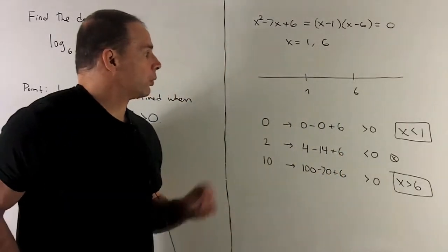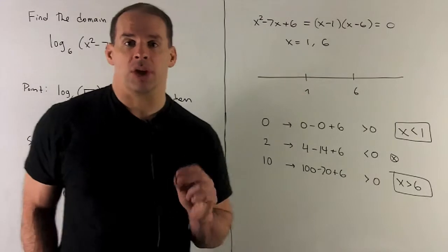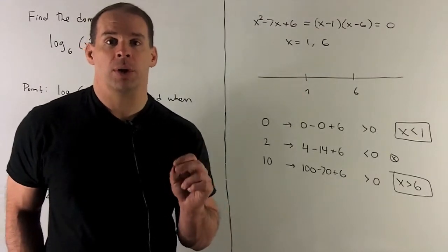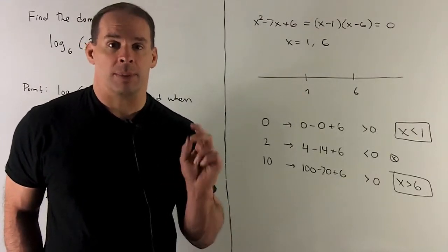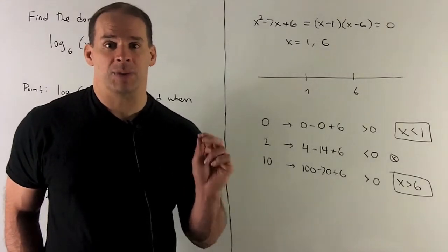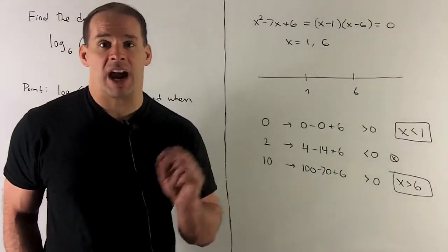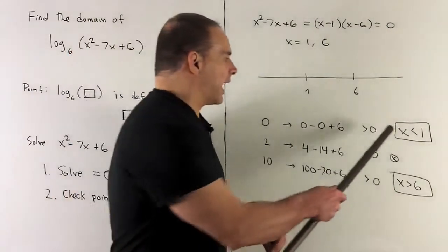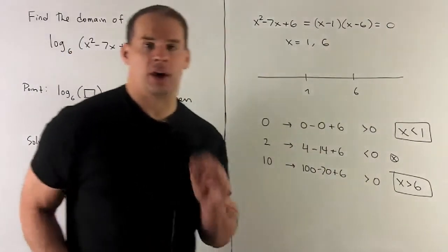What do we do? We're going to check a point in each region. So I'll use 0, 2, and 10. If I put 0 in our function, we get 0 minus 0 plus 6. That's positive. So I'm going to keep that entire region. We'll have x less than 1 in our domain.